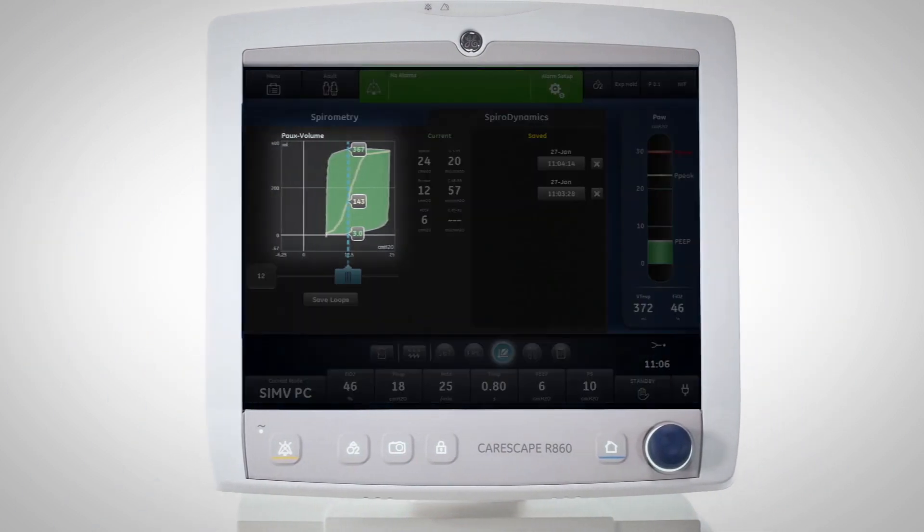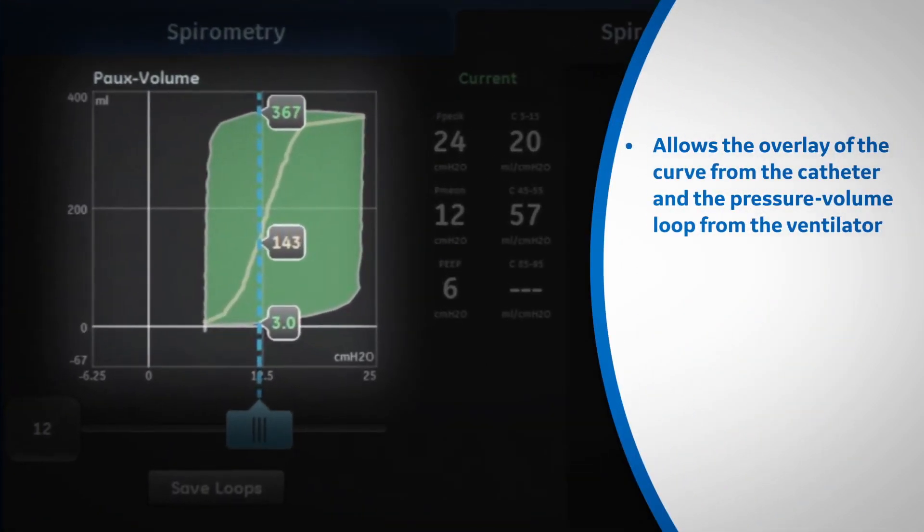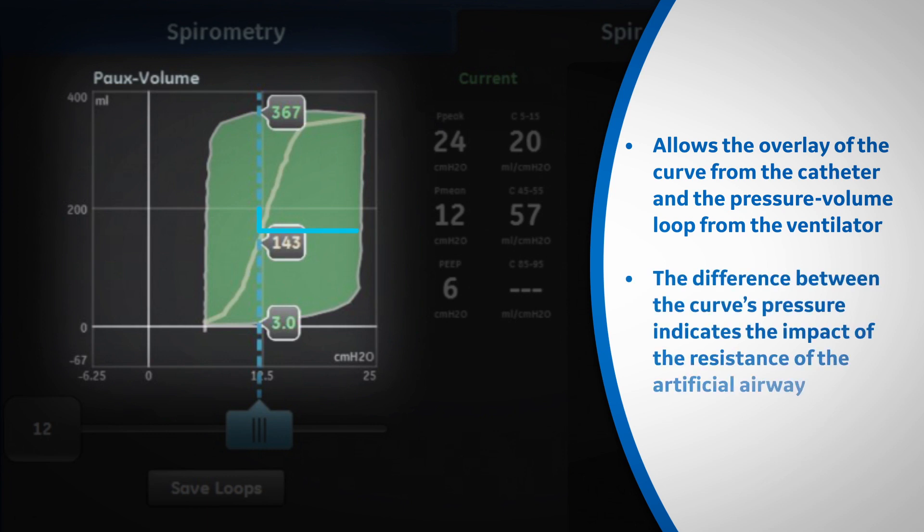The curve represented using the SpiroDynamics Tool allows for easier visualization of the upper and lower inflection points. The CareScape R860 allows the overlay of the curve from the catheter and the pressure-volume loop from the ventilator. The difference between the curve's pressure indicates the impact of the resistance of the artificial airway.